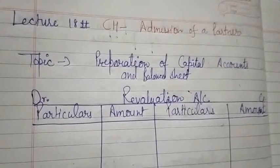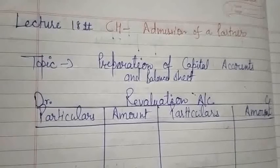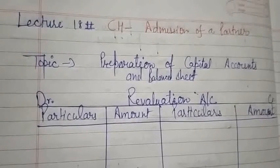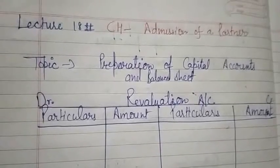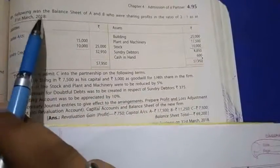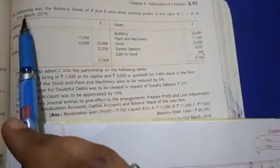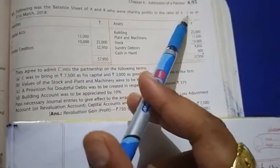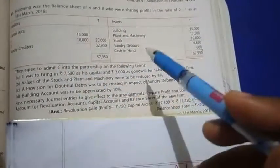Good morning class. Today's topic is preparation of capital accounts and balance sheet. I'll take a numerical from your book TS Grewal — this is the last topic of this chapter. Be attentive because this is the main concept and this type of question is asked in board exams. The following was the balance sheet of A and B, who were sharing profit in the ratio of 2:1 as at 31st March 2018, with liabilities and assets given.